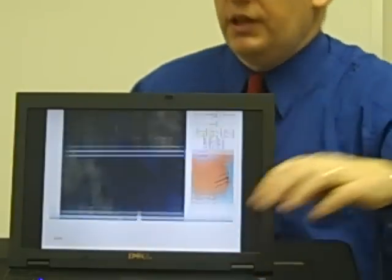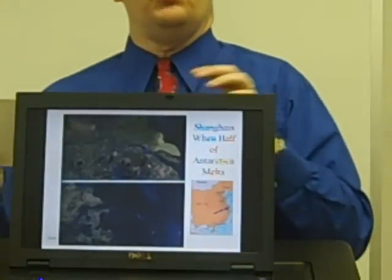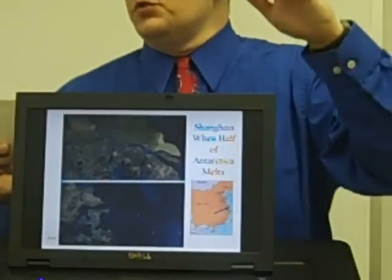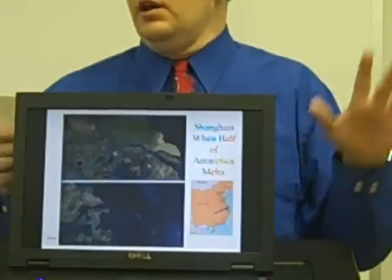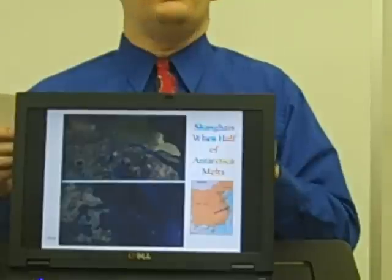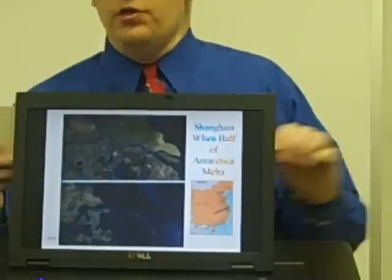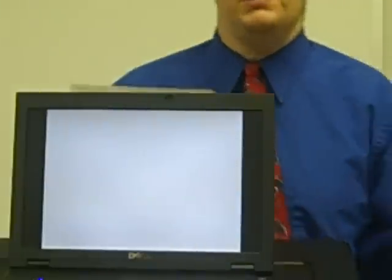One more example is Shanghai, China. Again, when half of Antarctica melts, this is what's going to happen there. And as you can see in that map, Shanghai is there on the coast. And all of that will be underwater, and that area is the home to more than 40 million people.